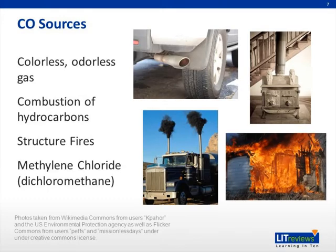So where does carbon monoxide come from? Carbon monoxide is a colorless, odorless gas produced from the combustion of carbon-containing compounds. Common sources include internal combustion engines found in automobiles and portable generators. Other sources include natural gas-based heating systems, camping stoves, or lanterns. A significant amount of carbon monoxide is produced in structure fires, in addition to other noxious gases.